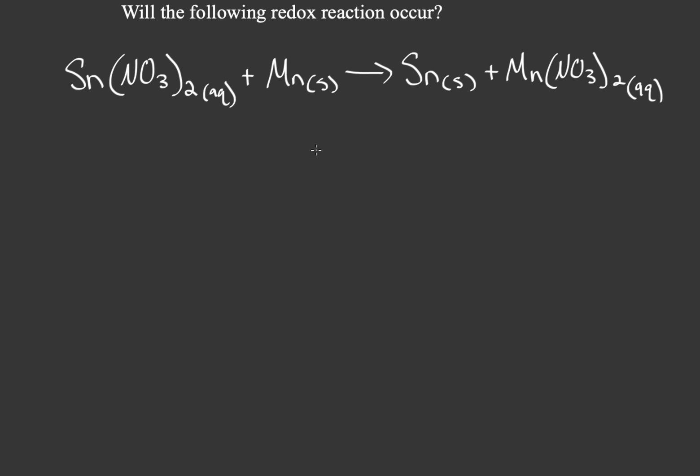The question asked is will the following reaction occur. You have tin nitrate in its aqueous form and solid manganese, and that turns into tin in solid form with manganese being paired up with nitrate in its aqueous form.